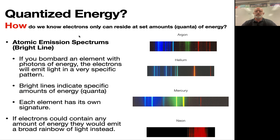Quantized energy means the electrons can be at one amount of energy or another. They have these very discrete, very set amounts of energy they're allowed to be at, but they can't be anywhere in between. We call those quantums or quanta of energy.